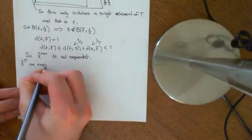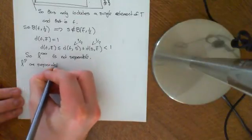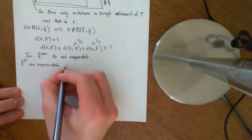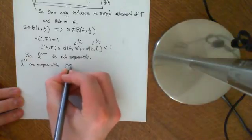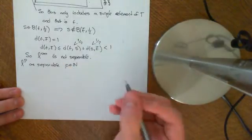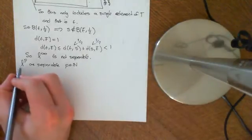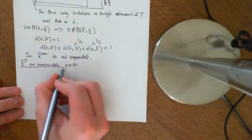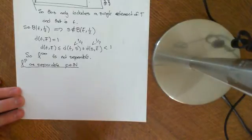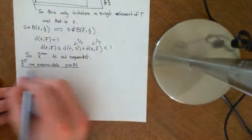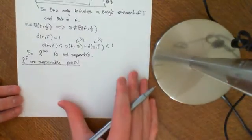And so far in this playlist, we've only been considering LP spaces where P is a natural number, i.e. it's 1, 2, 3, 4, etc. We haven't been considering things like P is a half or any old real number. So we'll continue doing that for now. So LP are separable, where P is a natural number.